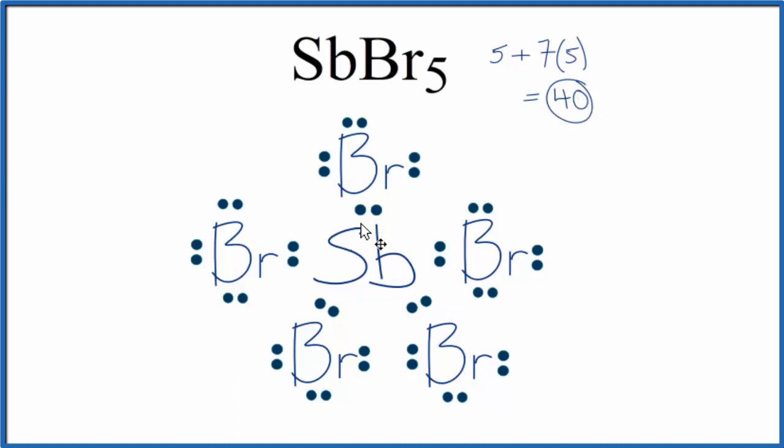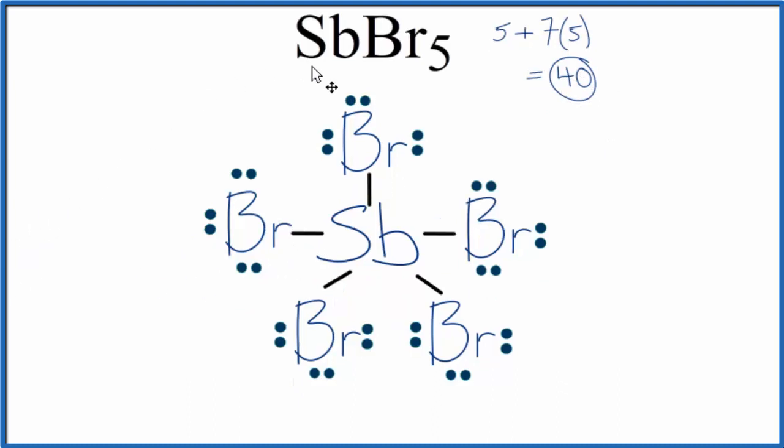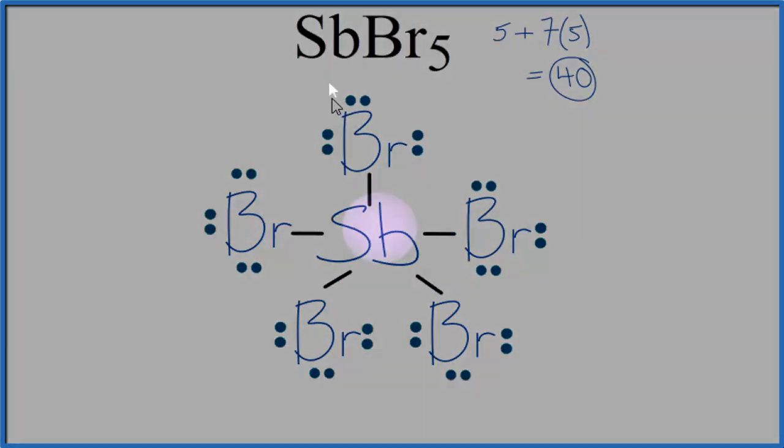It might be clearer if we replace these bonding electrons with lines. And that's our Lewis structure for SBBr5.